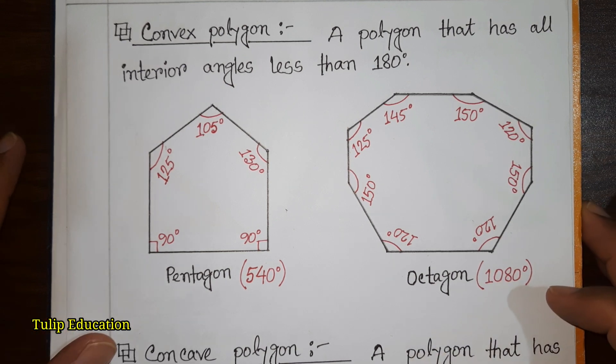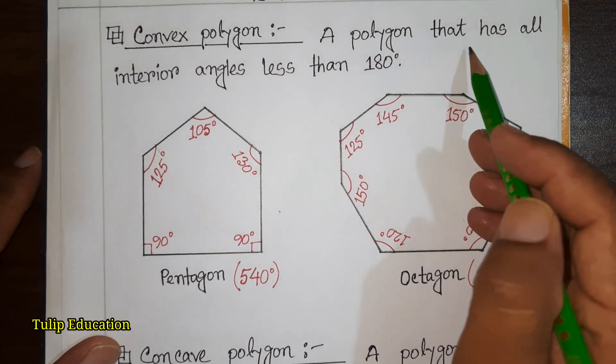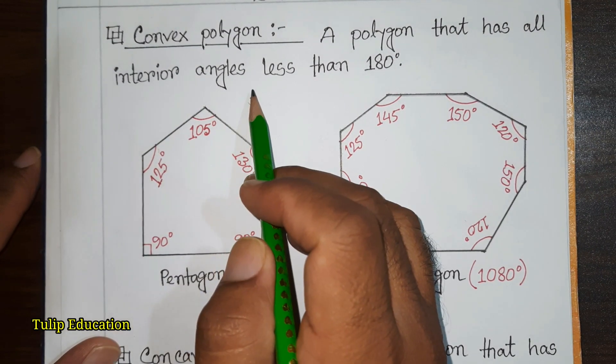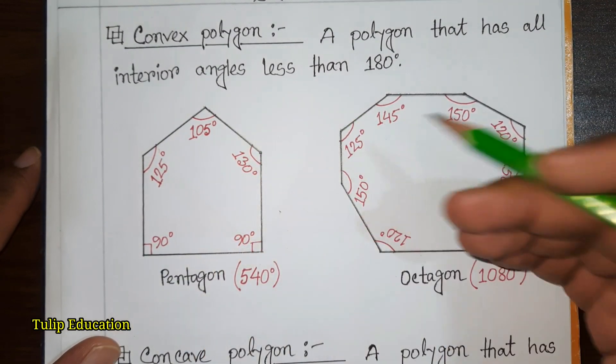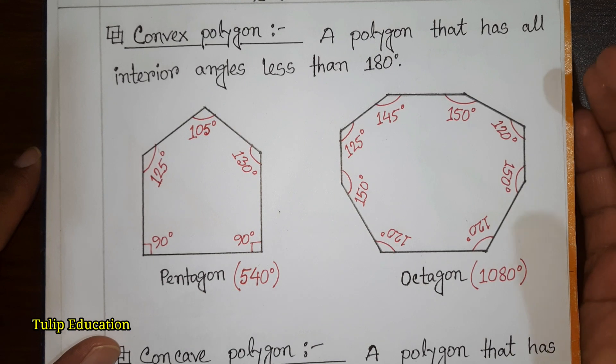What is a convex polygon? A polygon that has all interior angles less than 180 degrees is called a convex polygon.